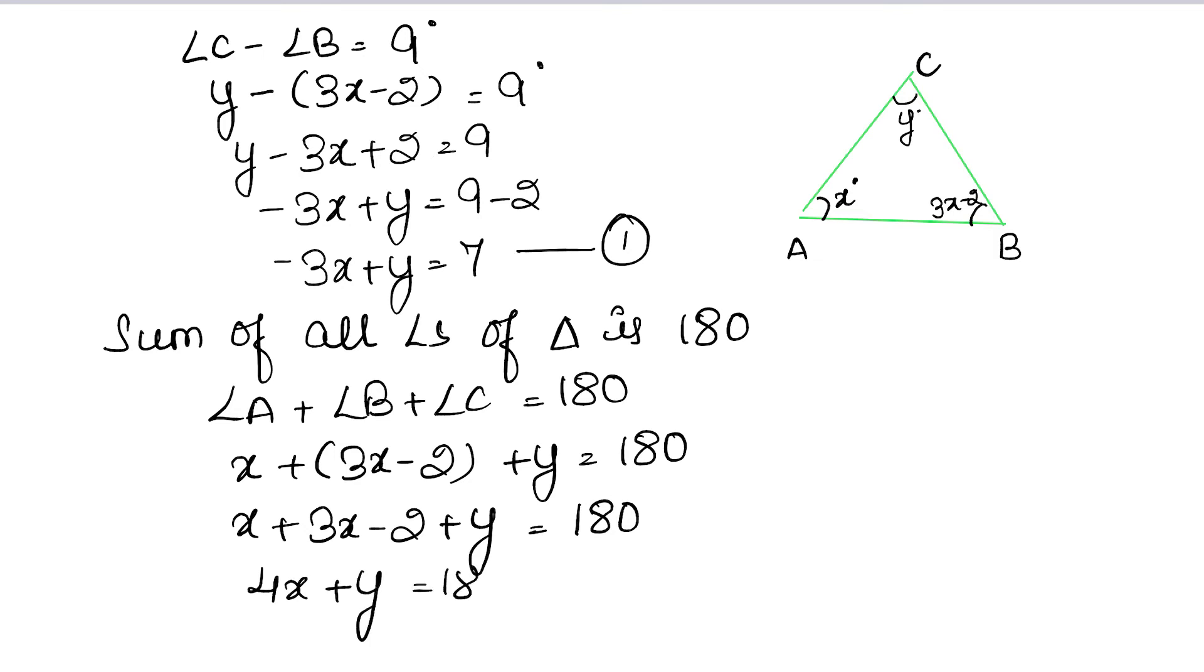That is 4x plus y equals to 182. This is our second equation, minus 3x plus y equals 7.